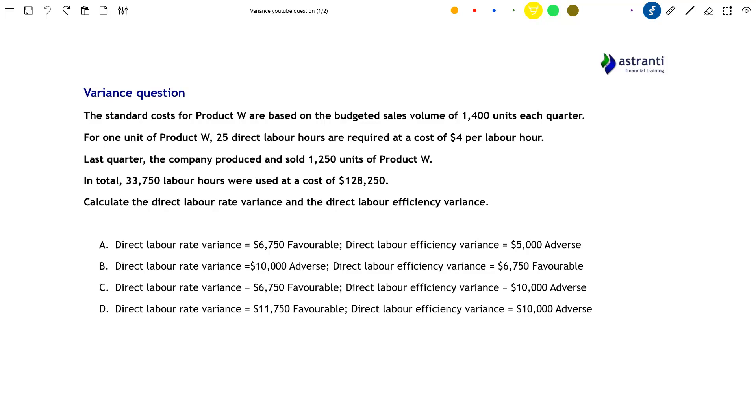We can see that this is a variance question. The requirement asks us to calculate the direct labour rate variance and the direct labour efficiency variance. This is very typical of the kind of question you might face, but also the kind of thing you might be expected to do as a management accountant. This involves breaking down a labour cost variance and identifying whether it was through lack of efficiency or paying too much.